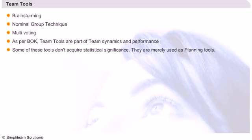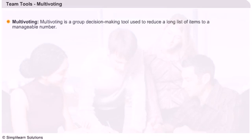In the next slide, we will learn the concept of multi-voting. Multi-voting is a decision-making tool used in Six Sigma to arrange and enlist a long list of items to a considerably smaller or manageable number.